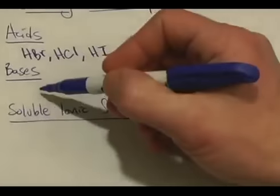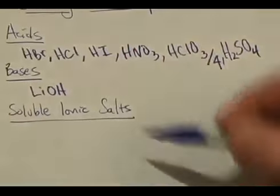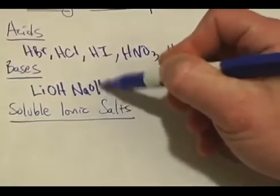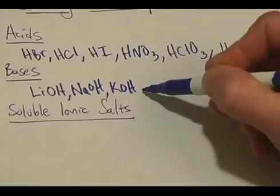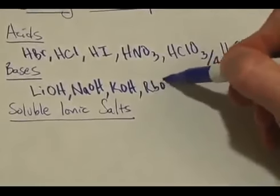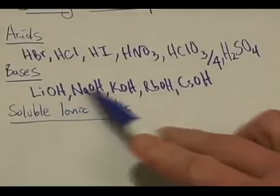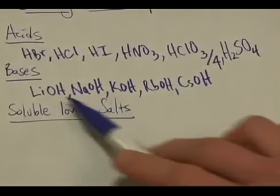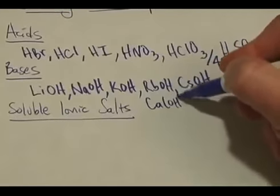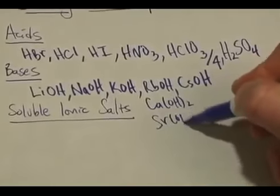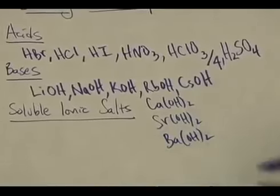The strong bases are super easy to remember because they're the soluble hydroxides of group 1 and three of the group 2 hydroxides: lithium, sodium, potassium, rubidium, and cesium hydroxide — all with a +1 and −1 charge, giving us five. Then calcium (plus 2 charge), strontium (plus 2 charge), and barium (plus 2 charge), for a total of eight.